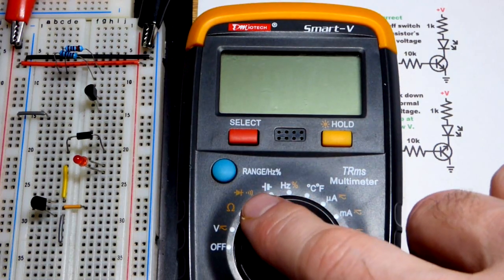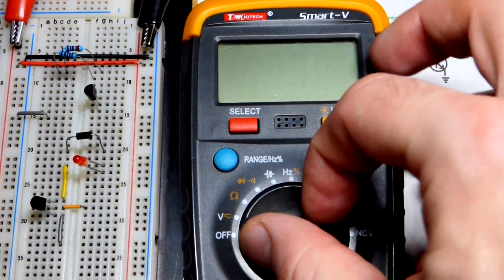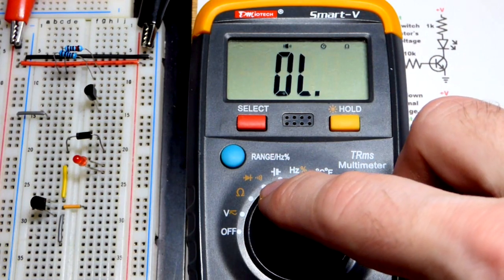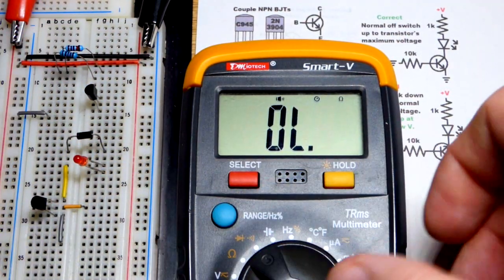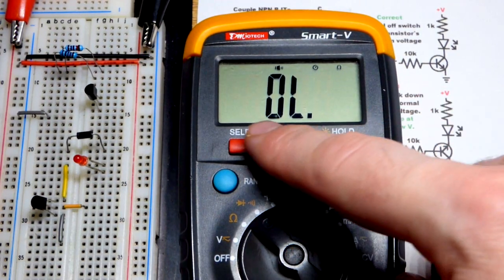So now, multimeters typically have diode testing settings right there. So, we go there. Right now, it's continuity. That means if there's no resistance, you get an annoying beep. I hit select.